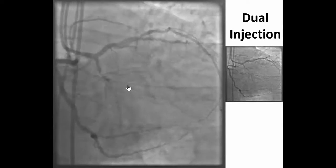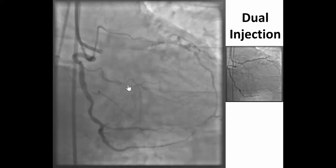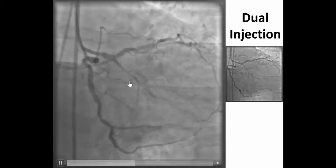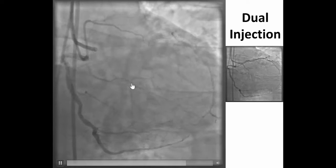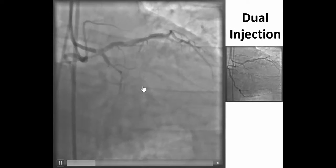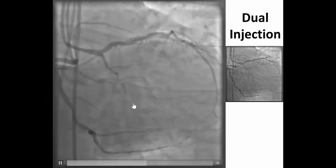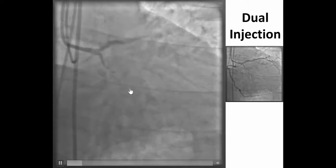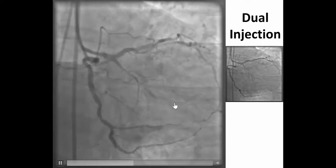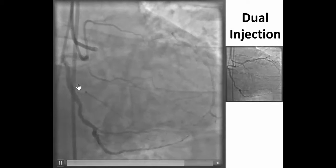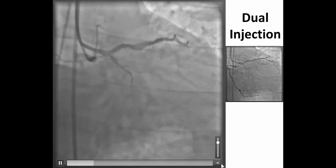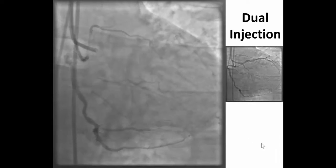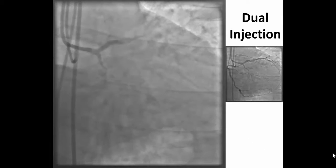This is the dual injection that illustrates the CTO characteristics. We have the ambiguous proximal cap with the side branch at the proximal cap. It appears to be fairly short with an occlusion length of 10–20 mm. There is a bifurcation on the distal cap with the distal vessel being relatively small but probably a good-sized vessel. The collaterals are mainly epicardial from the right coronary artery and don't appear particularly favorable for retrograde crossing.